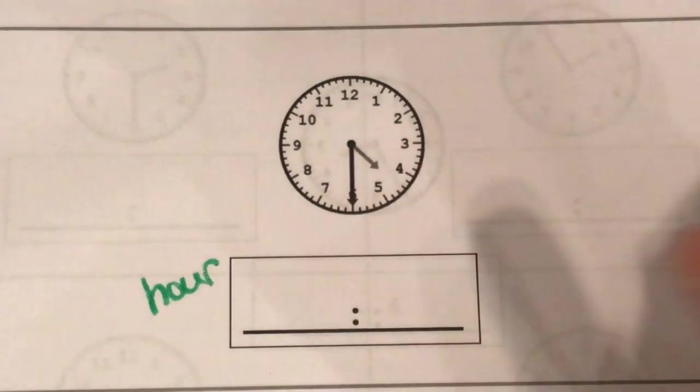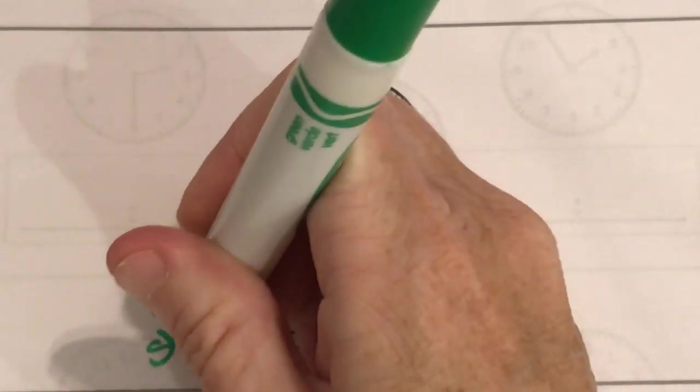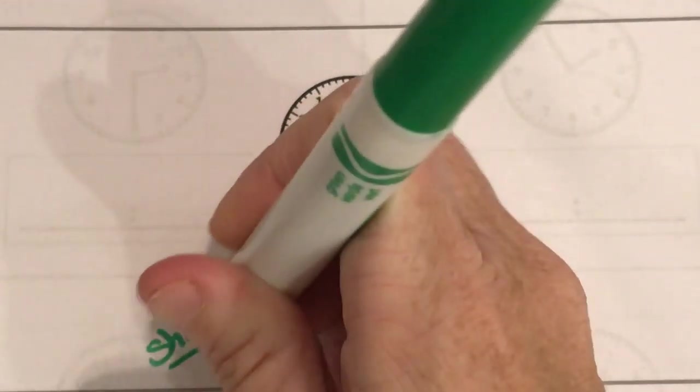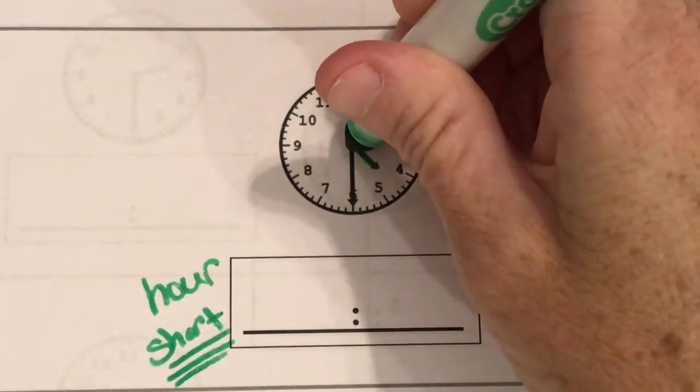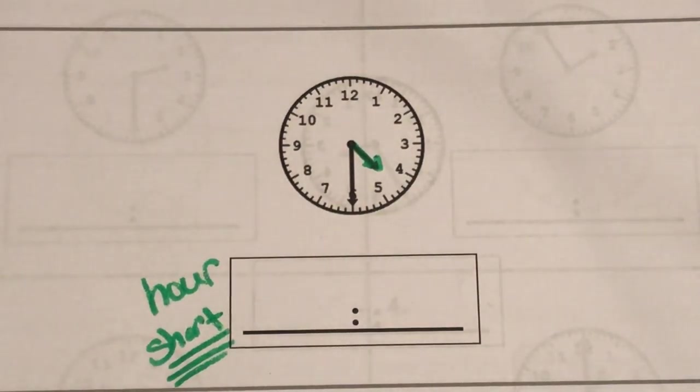Well my hour hand is my short hand. It's our short one. So this is my hour hand right here. That's my hour hand.